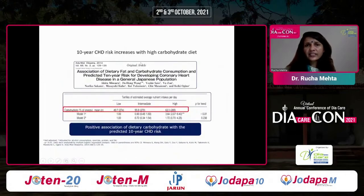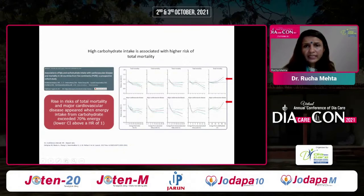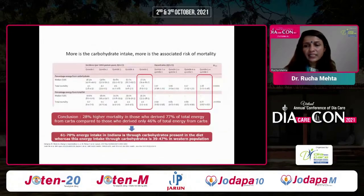Ten-year coronary heart disease risk increases with a high-carbohydrate diet, as shown by Dr. Akira's group, who divided patients by average carbohydrate intake and found higher carb intake correlated with higher CHD risk. The PURE study also demonstrated that regardless of fat type consumed — saturated, monounsaturated, or polyunsaturated — total mortality decreased, while increasing carbohydrate intake raised total mortality and cardiovascular disease risk.